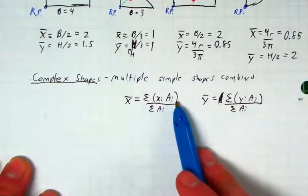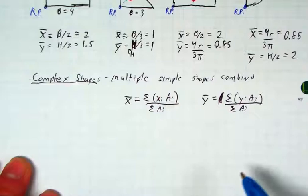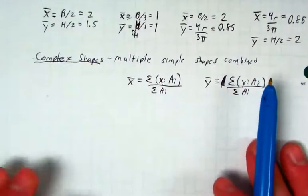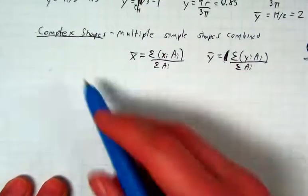So, individual x is multiplied by individual areas, divided by the sum of all individual areas. And again, hopefully by the end of this you'll understand what I mean when I say average...